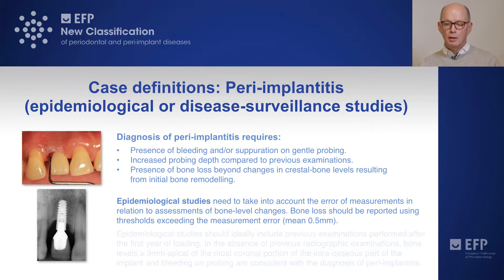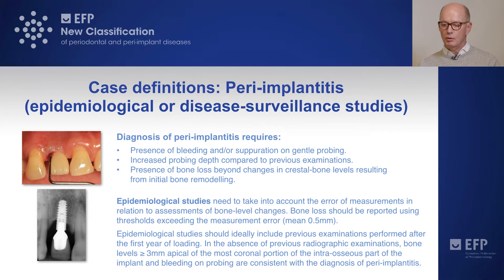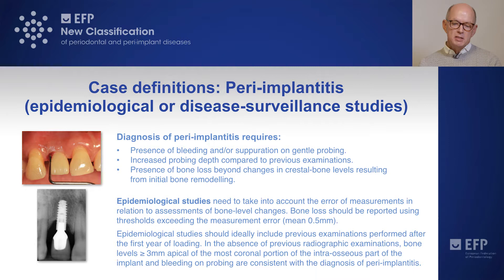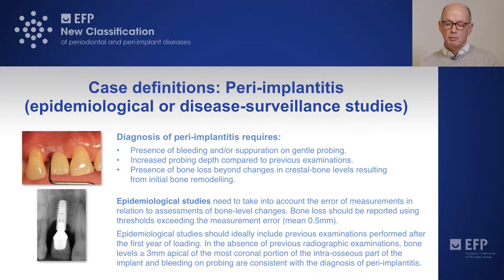In the absence of previous radiographic examinations, however, bone levels at least 3 mm apical of the most coronal portion of the intraosseous part of the implant, together with bleeding on probing, should be consistent with the diagnosis of peri-implantitis.